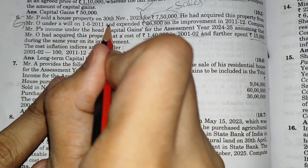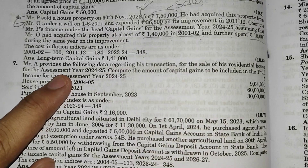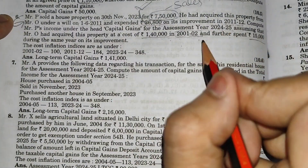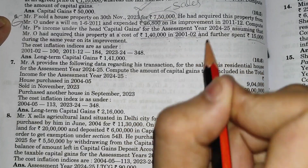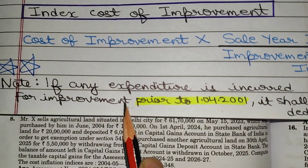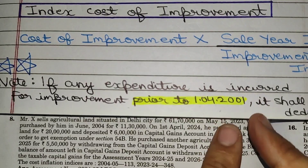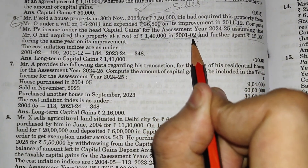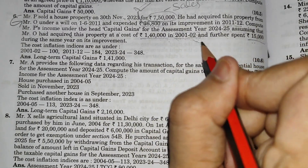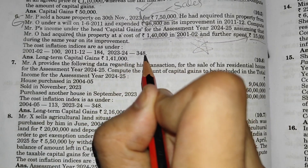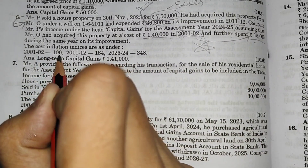Question में जब 1 June 2011 को Mr. P को वसीयत में यह घर मिला था, उस समय का price हमको बताया नहीं गया है। तो जिस price पे Mr. O ने इस घर खरीदा था, 1,40,000, उसी price को हम cost of purchase मानेंगे। 2001-02 में 15,000 रुपए का improvement हुआ था, इसको index cost of improvement निकाल के less करेंगे। 1 April 2001 से पहले अगर improvement पे खर्चा हुआ है वो नहीं deduct होगा। यहाँ 2001-02 यानि 1 April 2001 से 31 March 2002 के बीच में improvement हुआ है, इसलिए यह consider होगा। Cost Inflation Index: 2011-12 का 184, 2023-24 का 348, और 2001-02 का 100।